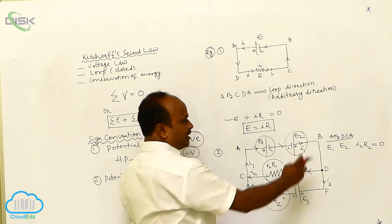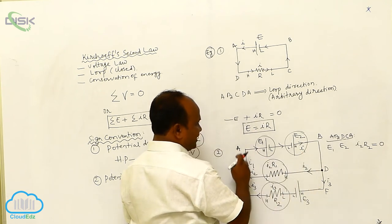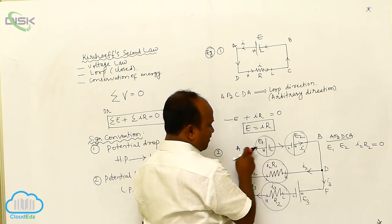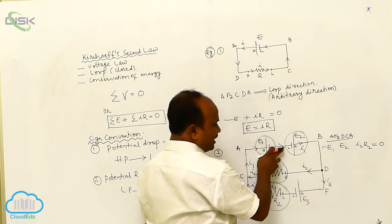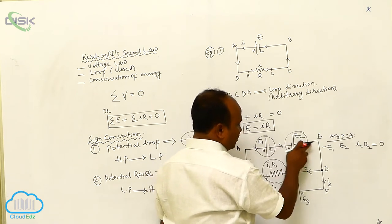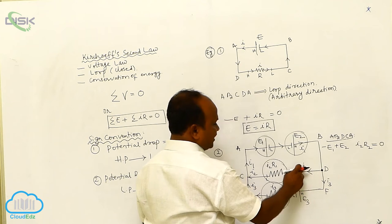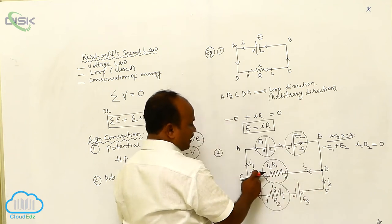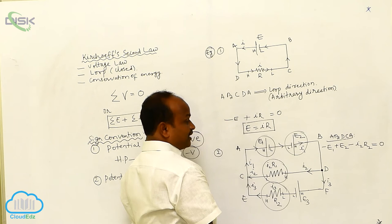My arbitrary direction is A-B-D-C-A. As I travel higher to lower, that is a drop, and a drop is taken as negative. As I continue and travel lower to higher, that is a potential rise, and rise is taken as positive. Continuing further, higher to lower is again a drop, taken as negative. To summarize: rise is taken as positive, drop is taken as negative.